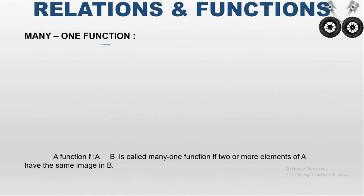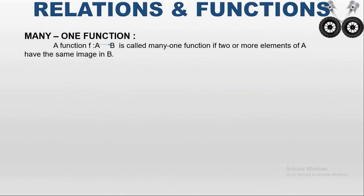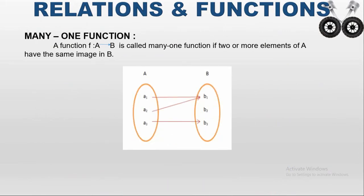Next is a many-to-one function. A function is said to be many-to-one if two or more elements in A have the same image in B. For example, A1 has image B1 and A2 also has image B1, so F(A1) = B1 and F(A2) = B1 — both have the same image B1. Then F(A3) = B3. This type of function is called a many-to-one function.